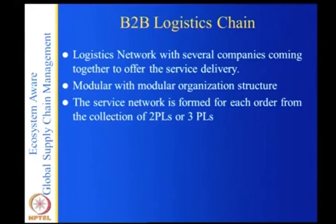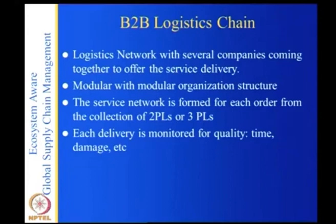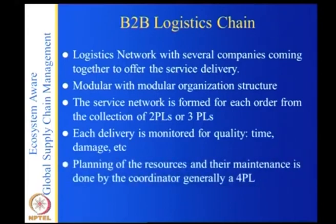At that time, there are no fixed players. You have a collection of people and from that collection you select the truck drivers, the warehouse places, the trucks, and so on — you form a network for each order. Each delivery is monitored for quality, time, and damage. Planning of resources and their maintenance is done by a coordinator called the 4PL — four-party logistics. He is asset-free; he is like an orchestrator who does not own any assets but just manages.